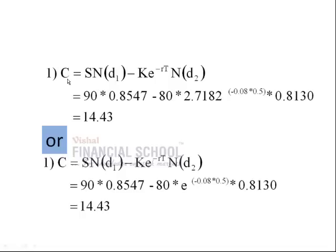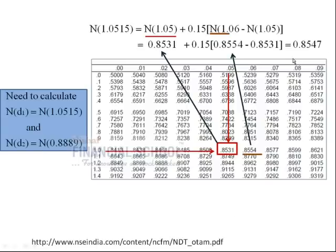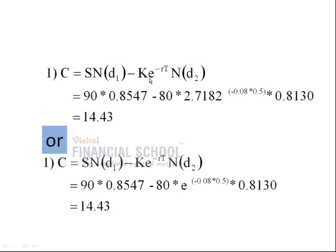Next, extrapolate all these answers in the call option value formula. S represents the spot price, which is 90, times N(d1), which is 0.8547, and K is the strike price times e^(-r*T) times N(d2). When you solve this, you get around 14.43. That means a call option premium as of now should be trading at around 14.43, with a strike price of 80 and a spot price of 90, with a time duration of six months and risk-free interest rate of 8%.